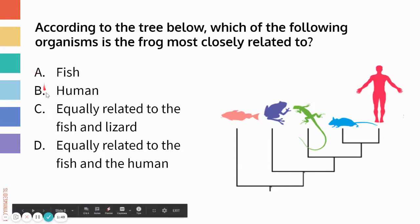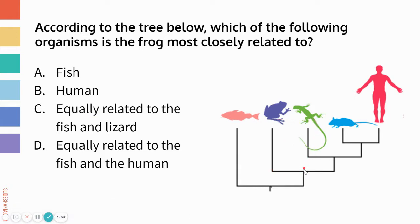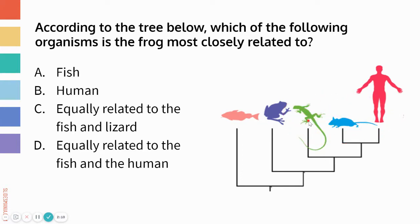Because of this, any answer that includes fish is incorrect. It can't be A, and it's not equally related to the fish and the lizard — the frog and the lizard are more closely related. The frog is also more closely related to the human. Looking at the most recent common ancestor of the frog and any other organism, we can see it's equally related to these three on the right.